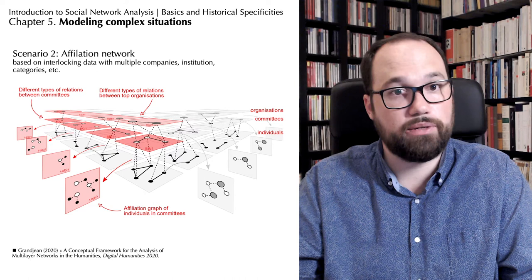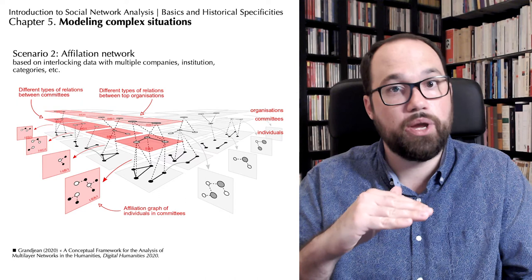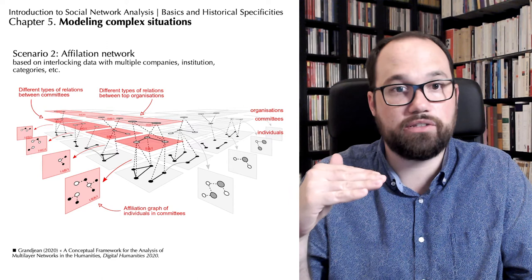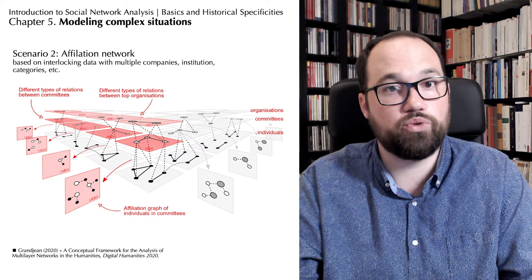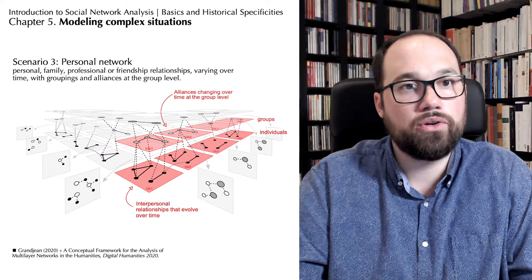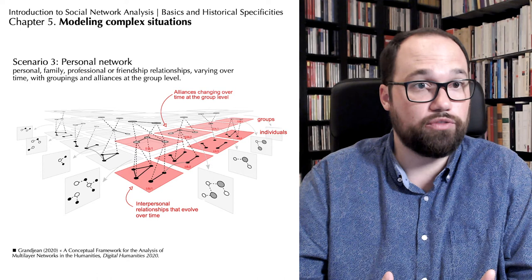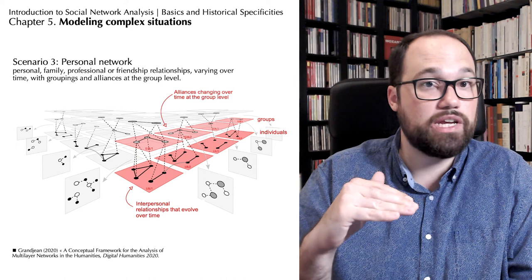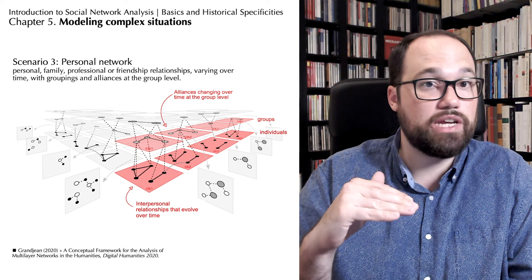To use an example that has been used a lot previously, we could look at an affiliation network. But rather than working on the individual level, we would focus on several institutional layers, one level with organizations and one level with committees involved in this organization, for example. This would make it possible, for example, to see if the organizations have relationships with each other that correspond to the relational work they do at the meso-organizational level. Or from a social history perspective, we could model interpersonal relationships that evolve over time. We will then be able to see if the evolution at the personal level is the same if we look at this social microcosm at the level of the groups in which individuals participate.